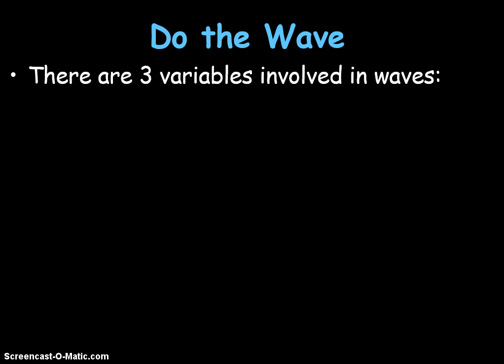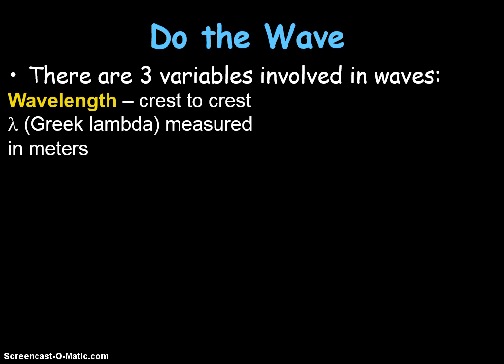Okay, so the first thing we're going to do is we're going to label a wave and there are three variables that are involved and only two of them will we really be focusing on in our class. So let's take a look at what a wave looks like. The first variable that we're going to be talking about is called wavelength.